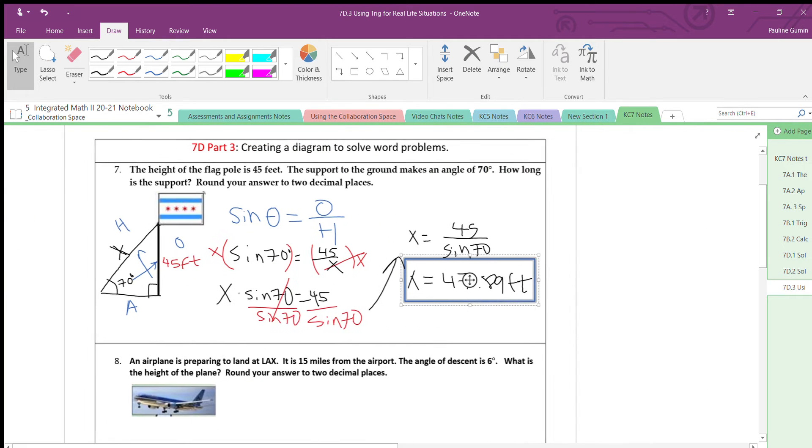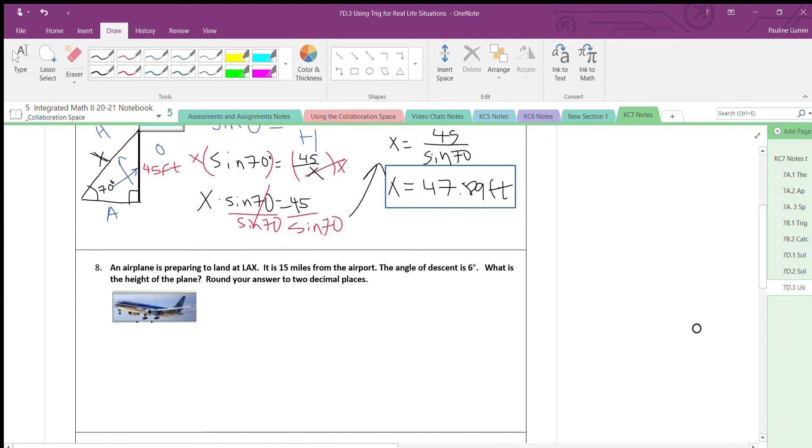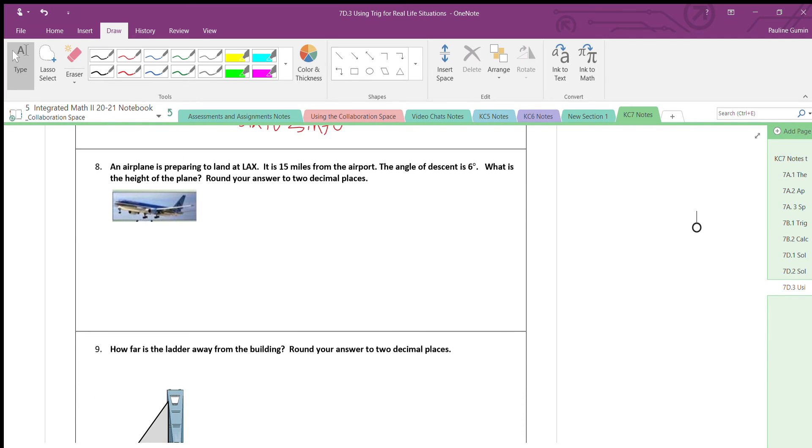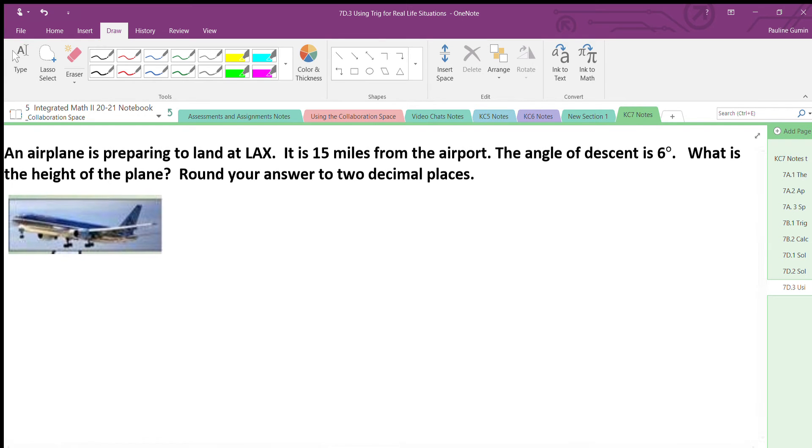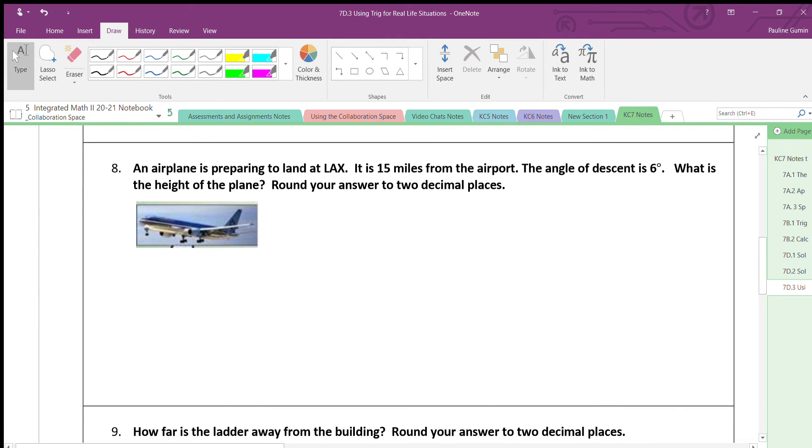Alright, let's move on to another problem. An airplane is preparing to land at LAX. It is 15 miles from the airport. The angle of descent, that means going downwards, is 6 degrees. What's the height of the plane? Okay, I'm a visual learner. I need to see this and I hope it helps you as well. So I know that we're 15 feet away from the airport. So the plane is here. Let's say that's 15 feet.